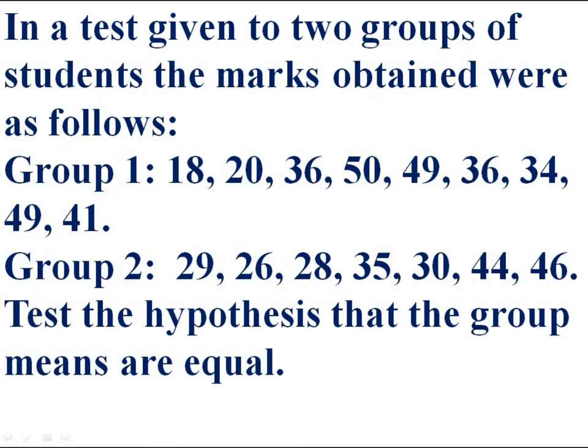In a test given to two groups of students, the marks obtained were as follows. Group 1: 18, 20, 36, 50, 49, 36, 34, 49, and 41. Group 2: 29, 26, 28, 35, 30, 44, and 46. Test the hypothesis that the group means are equal.